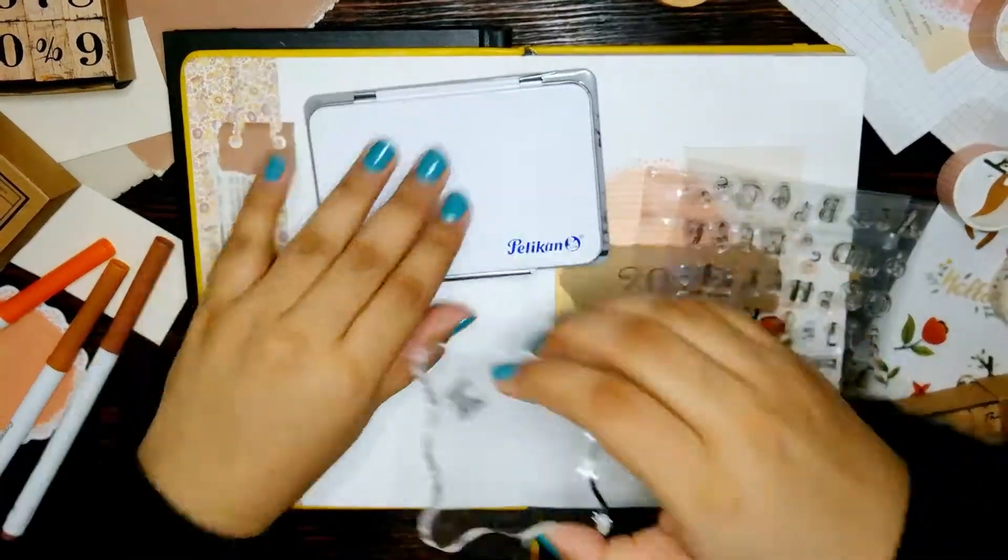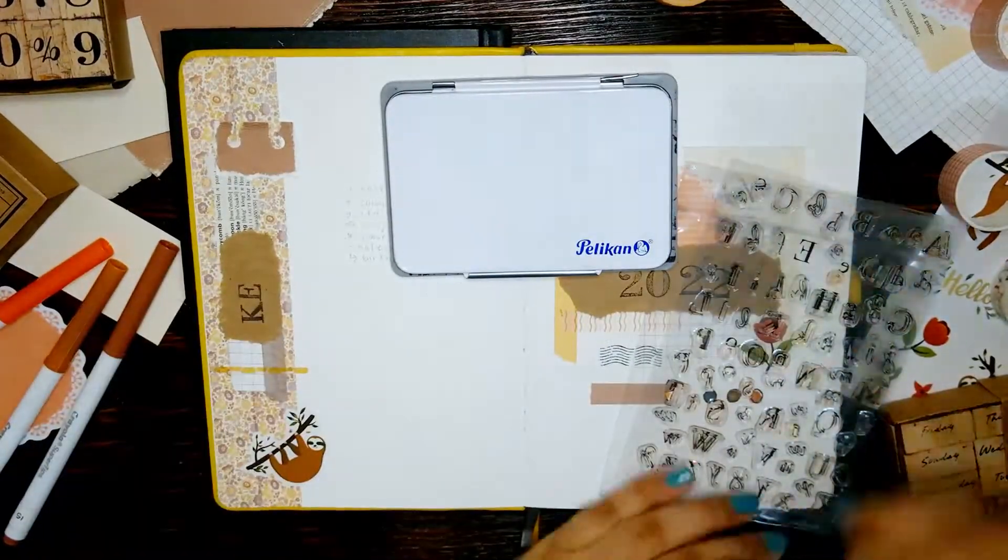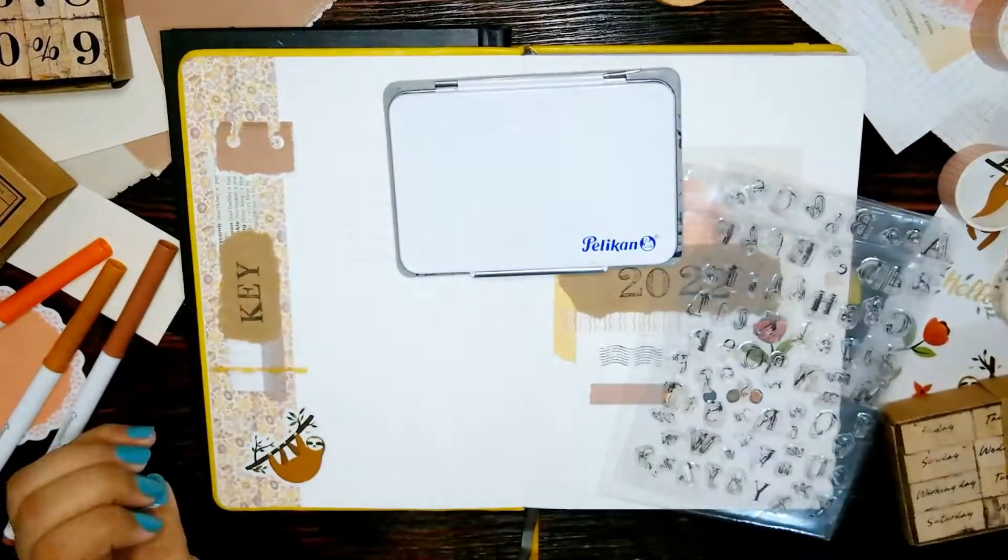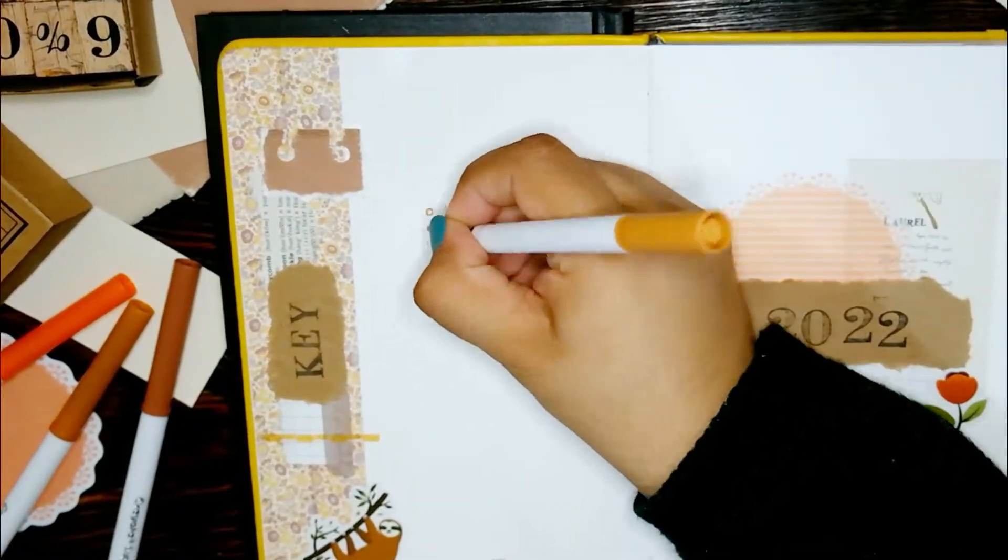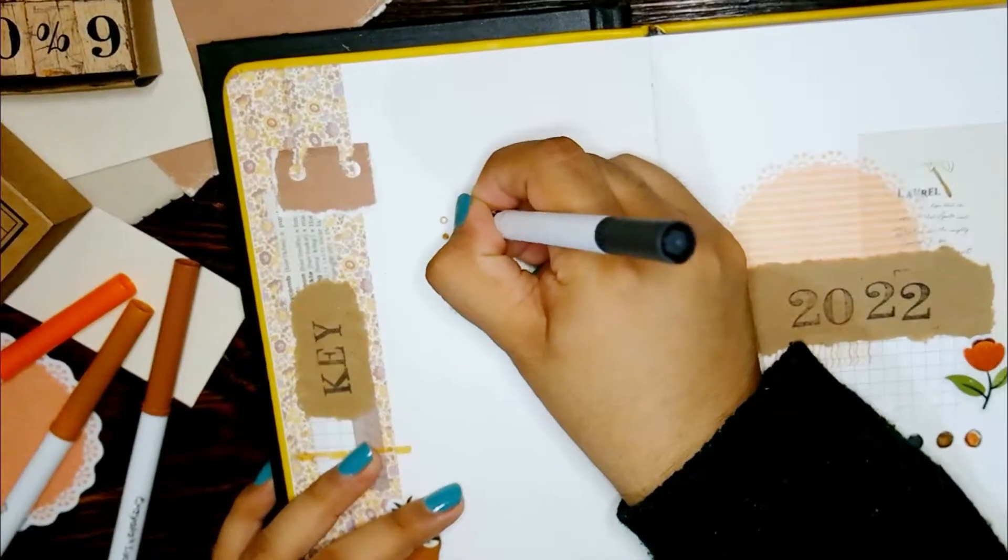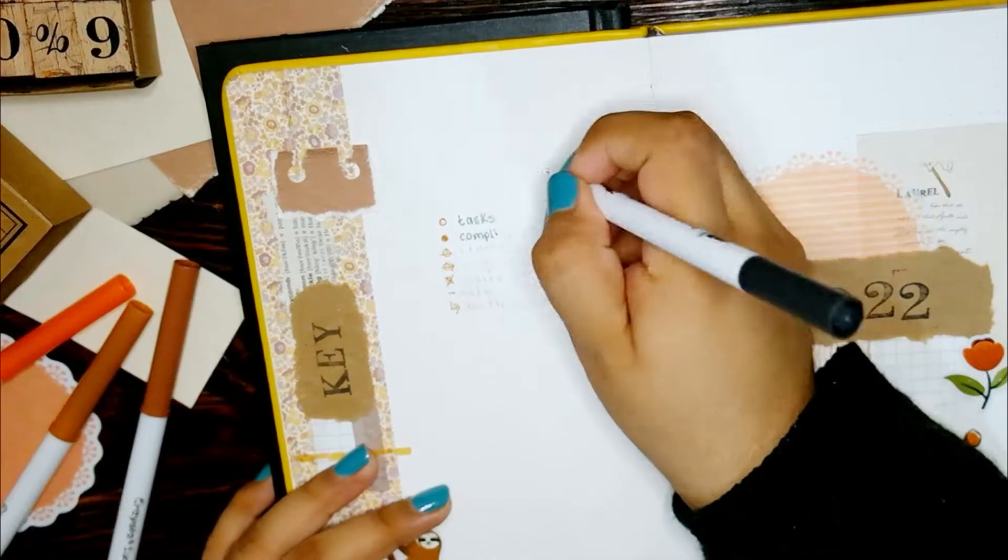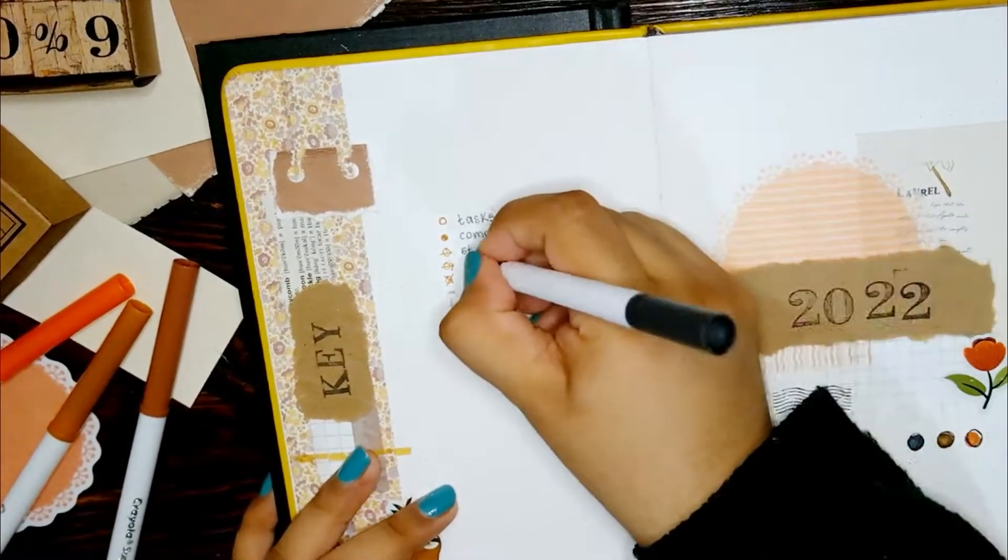I've been bullet journaling for over two years since October 2019 and I started off with the original system but nowadays I use a different set of symbols for my tasks. The ones I used for 2021 had been working just fine for me so I decided to keep them as they were and here's a close-up so you can see what they look like.